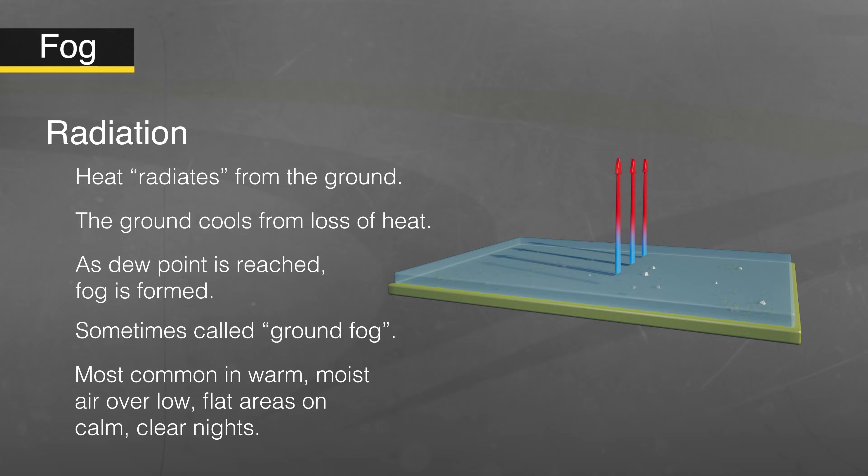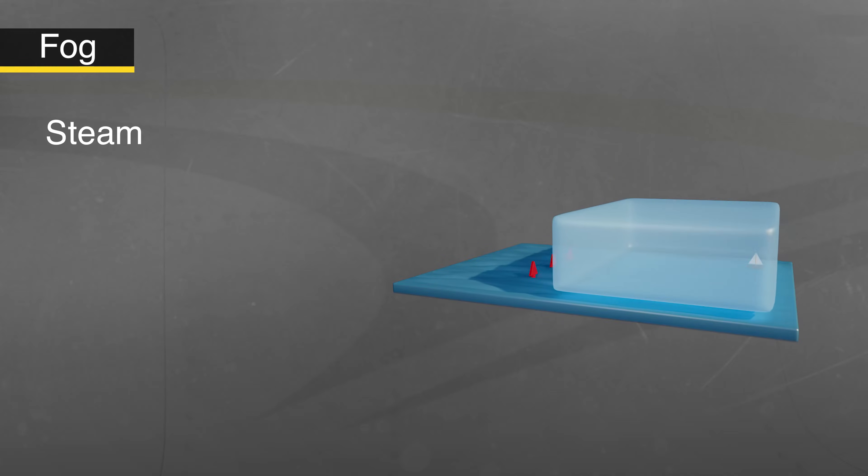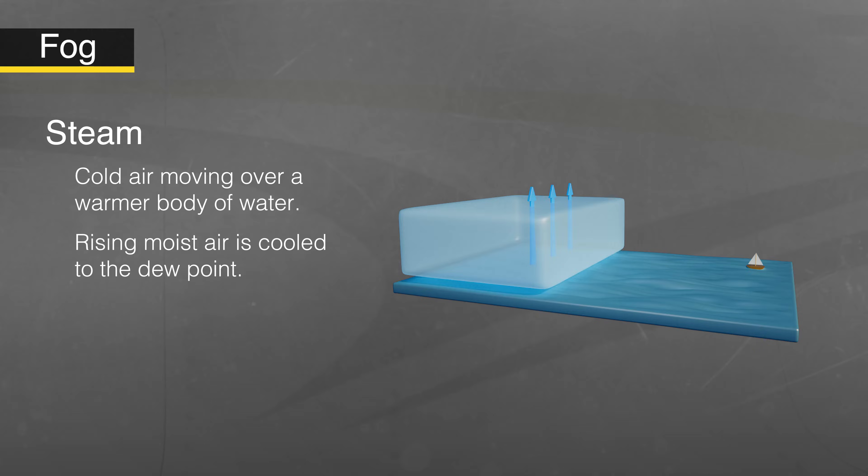Steam fog is the result of cold air moving over a warmer body of water. In this case, the air is cooled from above and the rising moist air reaches the dew point in that colder air, resulting in condensation. Low level turbulence and icing can sometimes result from the unstable setup of cold air over a warm moist surface.